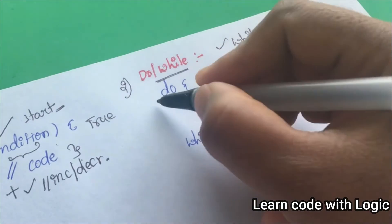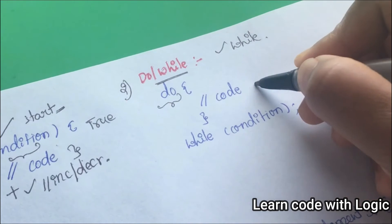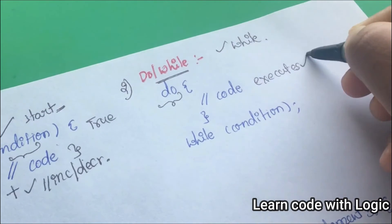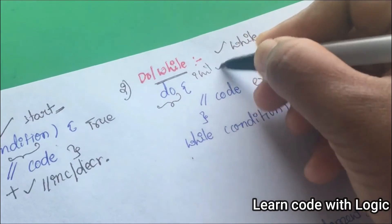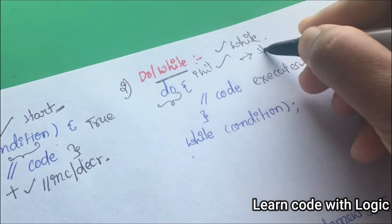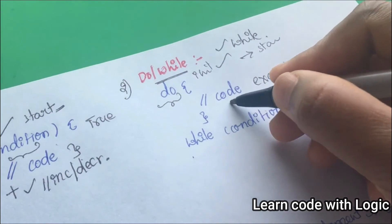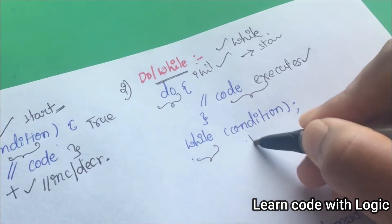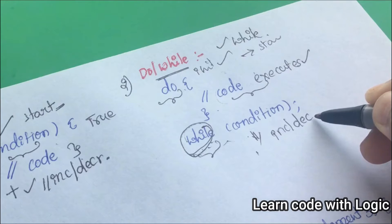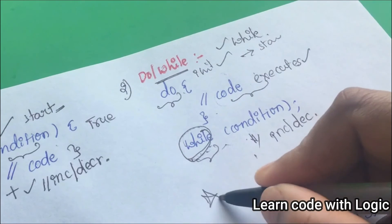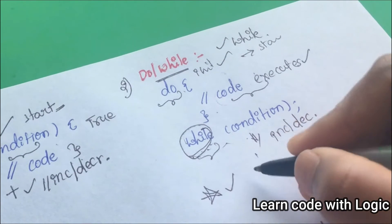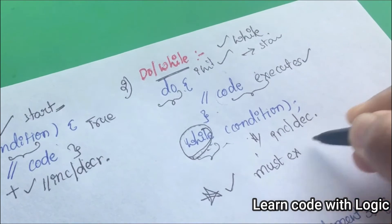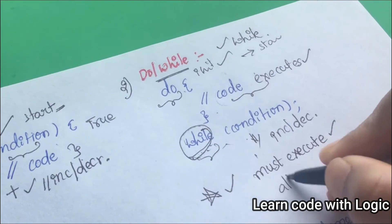The second one, the do-while loop, is also similar to the while loop, but the difference is that the do-while loop first executes the code. We have the initialization — the starting point — then execution, after which we give the condition, then increment or decrement. One important thing to remember is that the code must be executed at least once.